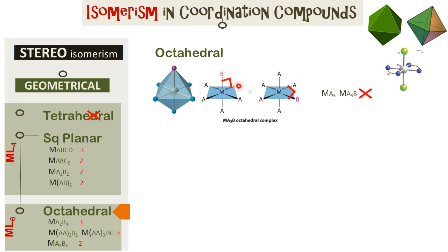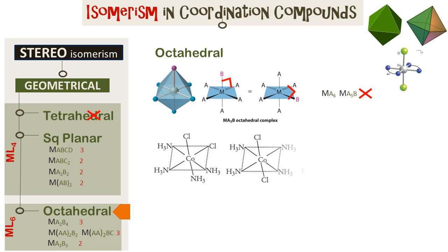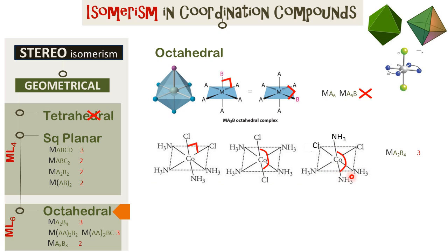In complexes of type MA2B4 — so NH3 is B4 and Cl is A2 — there are three isomers possible. In one, the angle between Cl and Cl is 90 degrees. In another, the angle between Cl and Cl is 180 degrees and between NH3 and NH3 is also 180 degrees. So we see three isomers in these situations.